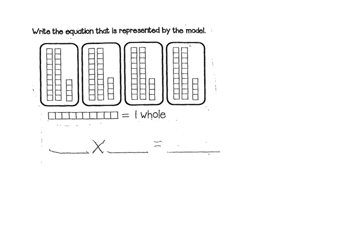Sometimes it's good to just put your pencil down and think your way through it before you try to do anything. This one says write the equation represented by this model. It gives you a key — I'm going to circle that in red — and they're giving you a base-10 block, which is often called a ten-long, and they're saying that represents a whole. So we have to stop and think about what that means. Usually a whole is one of your bigger squares, like a hundredths grid.